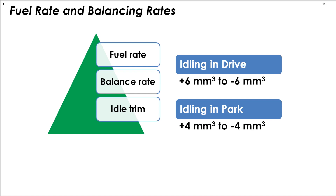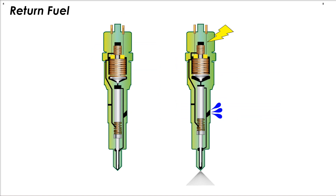Balance rates trim the fuel to the cylinders so that they produce the same amount of power at idle. The normal operation of the solenoid injector produces return fuel. An excessive amount of return fuel indicates a faulty fuel injector.